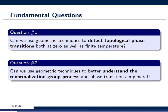Here are the fundamental questions I am trying to address in this talk. First, can we use geometric techniques to detect topological phase transitions both at zero as well as at finite temperature? And second, can we use these techniques to better understand the renormalization group process and phase transitions in general?